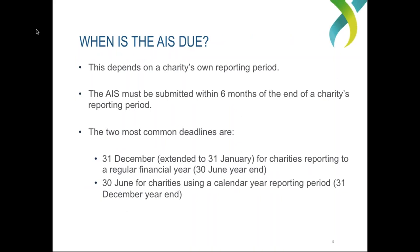The due date for the Annual Information Statement will be different for all charities, because it depends on a particular charity's reporting period — the dates to which they report internally. Most charities will report to the regular financial year of July to June. The rule is that an AIS must be submitted within six months of the end of a charity's reporting period. For example, organisations reporting to a regular July to June financial year are required to submit their AIS within six months of the end of June, meaning their due date would be at the end of December.